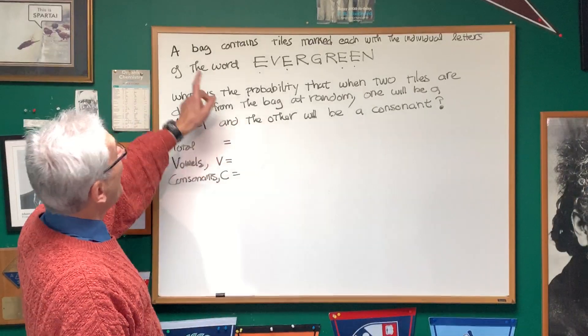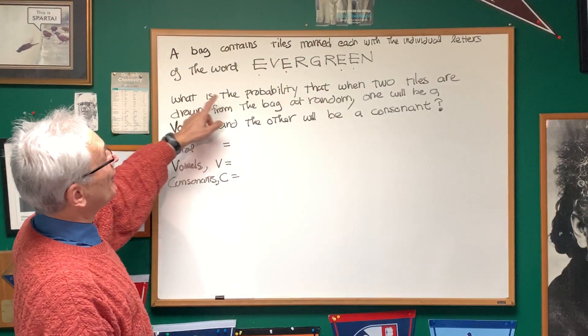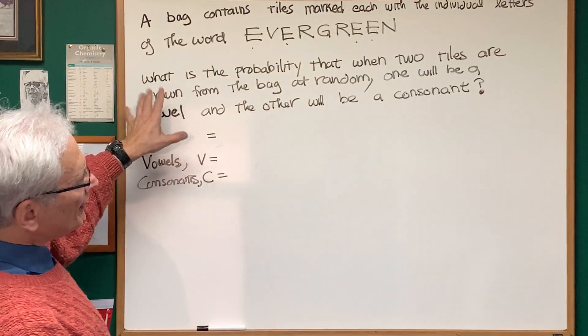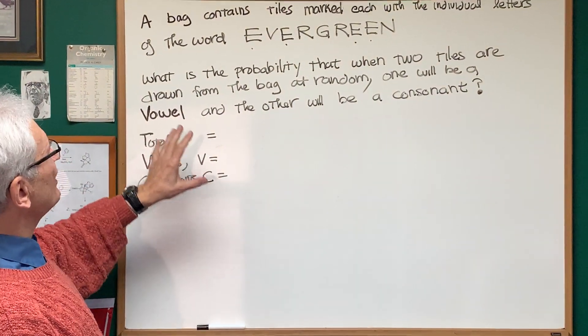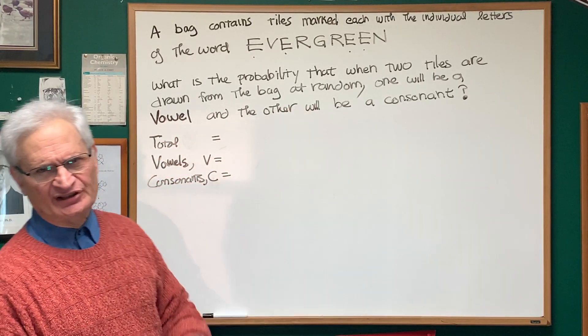Okay, let's read the problem together. A bag contains tiles, each marked with the individual letters of the word evergreen. What is the probability that when two tiles are drawn from the bag at random, one will be a vowel and the other will be a consonant?